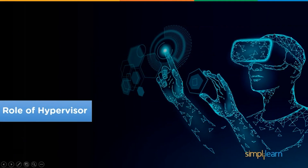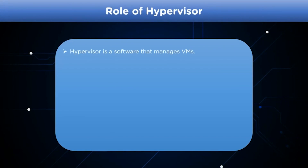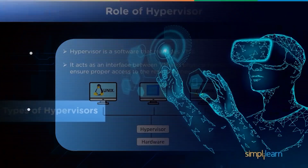A hypervisor is a software layer that manages virtual machines. It forms an interface between the physical system and the virtual machine, ensuring proper access to resources. It also manages virtual machines so that they don't interfere with each other's resources.